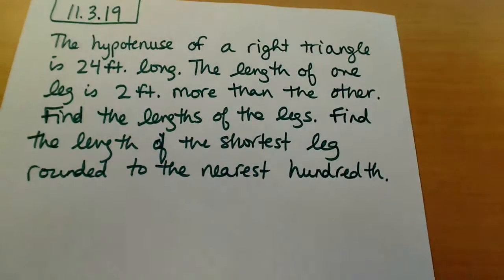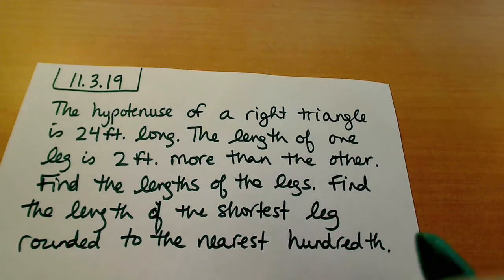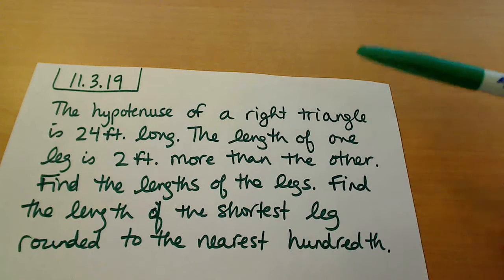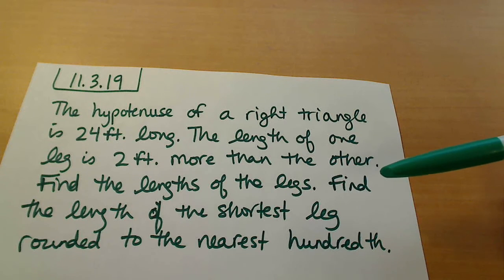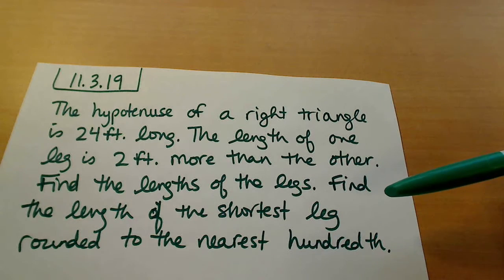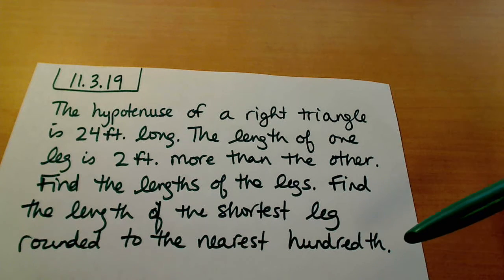This is problem 11.3.19. The problem is: the hypotenuse of a right triangle is 24 feet long, and the length of one leg is two feet more than the other. We want to find the lengths of the legs, and then find the length of the shortest leg rounded to the nearest hundredth.